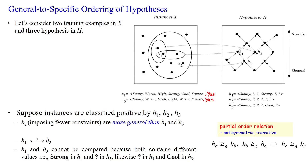Hello everyone. We will see an example for general-to-specific ordering of hypotheses. Here we are taking two training examples and three hypotheses.